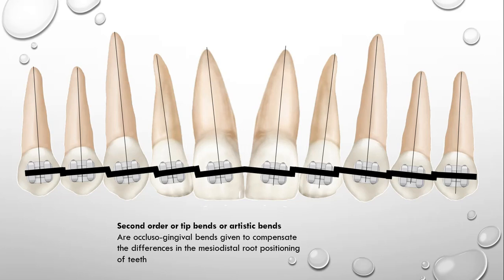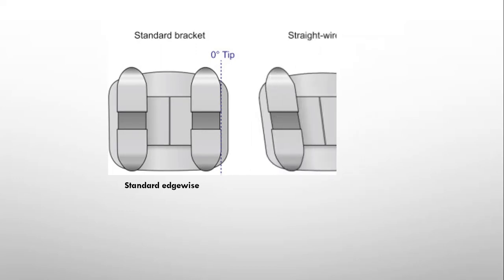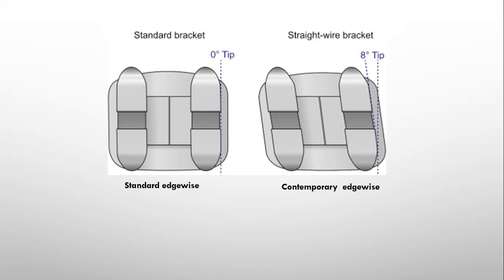Is there any other option if you don't want to give these kinds of bends? Yes, of course. In contemporary edgewise brackets, you do not have to give these bends. If you compare the standard edgewise bracket with the contemporary edgewise bracket, you will appreciate that the standard edgewise bracket was pretty straight, however the contemporary edgewise bracket is angulated — there is built-in angulation. This angulation depends on the type of the tooth. All the brackets are different: central incisor will have 5 degree tip, lateral incisor will have 9 degree tip, canine will have 11 degree tip. This is the same thing Andrews gave in the form of the second key.